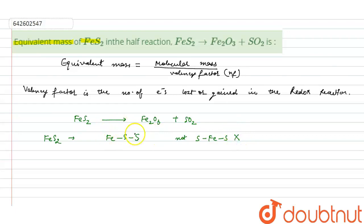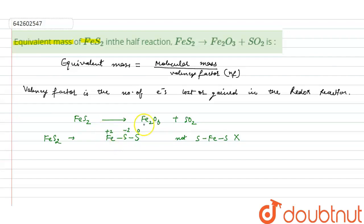In FeS₂, the oxidation state of one sulfur atom is zero and the oxidation state of the other sulfur atom is minus two. So the oxidation state of Fe in FeS₂ will be plus two.